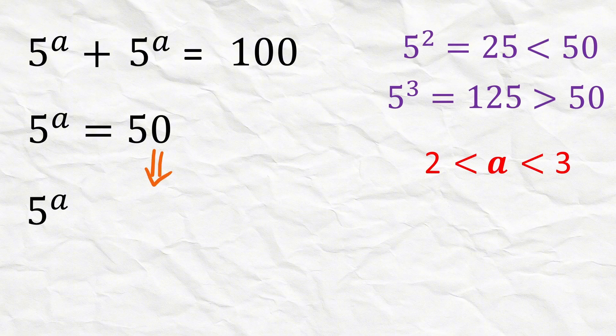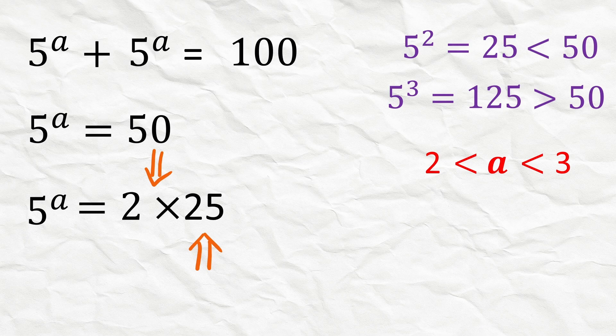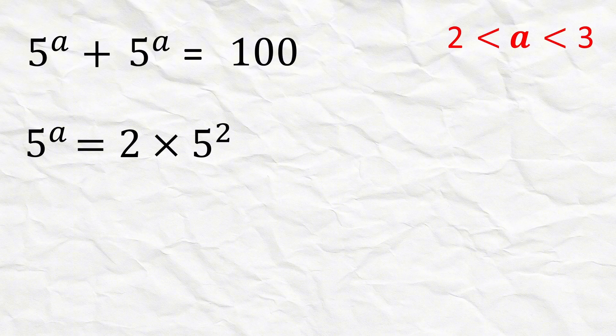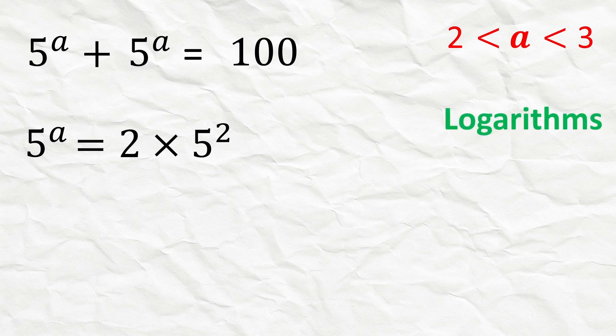First write 50 as 2 times 25. Now write 25 as 5 squared, so 5 raised to a equals 2 times 5 squared. To find the exact value of a, we can use logarithms.